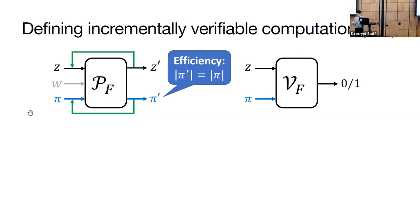For efficiency, we want that the proof size stays constant. We don't want the proofs to grow with the number of times we'd run the prover. Otherwise, the prover's input size, and hence runtime, will grow at each time step. IVC satisfies the standard completeness and proof of knowledge properties, but they aren't that important for this talk, so I won't define them.